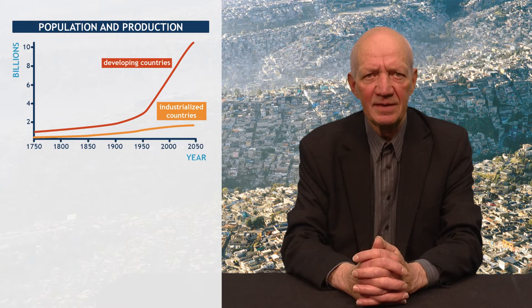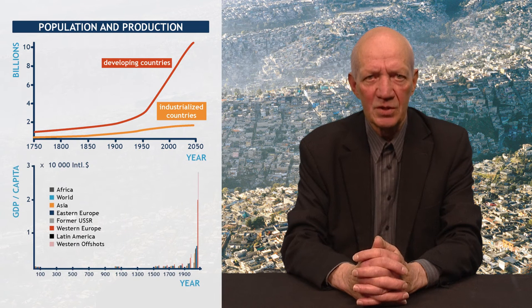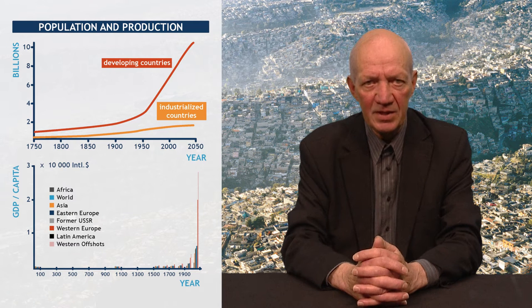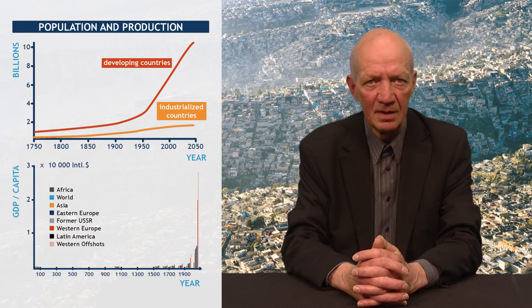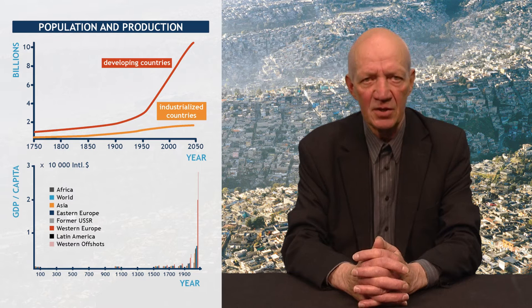By now, the human world population is more than 10 times as large as in the mid-18th century. Production growth was slow at the beginning of the Industrial Revolution and accelerated later, especially after the Second World War. In the 20th century, industrial production increased by about a factor of 40. So did the catch of fish, where sails or vessels were replaced by fossil fuels, and fishing technology was strongly influenced by industrial developments.